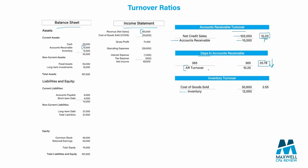Inventory turnover works in a very similar way. Inventory goes in the denominator and cost of goods sold goes in the numerator. We have $30,600 of cost of goods sold, because when we sell something we debit cost of goods sold and credit inventory. With an inventory balance of $12,000, this means we sold our inventory 2.55 times. We can convert this into days in inventory by dividing 365 by 2.55 to see how many days on average it takes to sell our inventory.